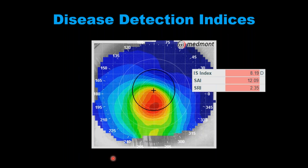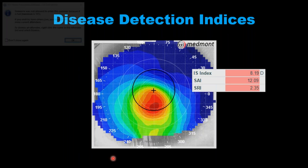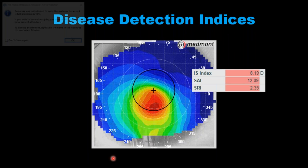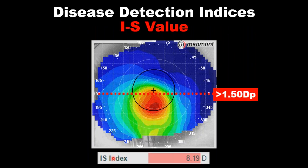There are specific disease detection indices that the topographer provides to help us appreciate which is normal, which is suspect, and which is truly abnormal. La topografía nos provee unos índices que sirven para ayudar el diagnóstico — para decirle cuándo hay una sospecha de un problema, cuándo la córnea es totalmente normal, o cuándo la condición está más avanzada. En topografía de Plácido, como el caso de Medmont y otros topógrafos, usamos los índices corneales.